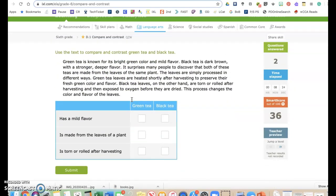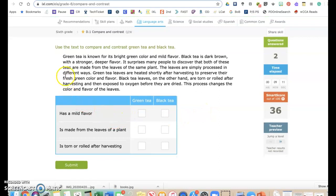Use the text to compare and contrast green tea and black tea. Green tea is known for its bright green color and mild flavor. Black tea is dark brown with a stronger, deeper flavor. It surprises many people to discover that both of these teas are made from the leaves of the same plant. The leaves are simply processed in different ways. Green tea leaves are heated shortly after harvesting to preserve their fresh green color and flavor. Black tea leaves, on the other hand, are torn or rolled after harvesting and then exposed to oxygen before they are dried. This process changes the color and the flavor of the leaves. So, green tea is known for its bright green color and mild flavor. So, that would be just green tea. Because it says black tea has a stronger, deeper flavor.